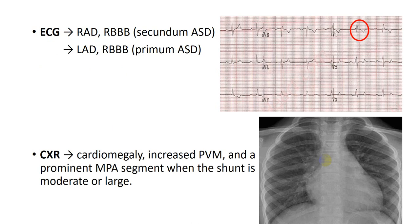On ECG, there is right axis deviation and right bundle branch block. Right bundle branch block means right ventricular volume overload. In V1 there is an RSR' pattern, which represents right bundle branch block — indicating RV volume overload. This is in secundum ASD. In primum ASD, there is left axis deviation and right bundle branch block. This is the key difference between secundum ASD and primum ASD on ECG: both have right bundle branch block, but secundum has right axis deviation while primum has left axis deviation.